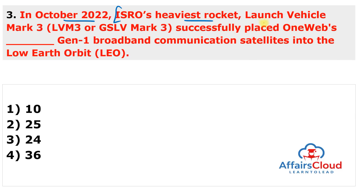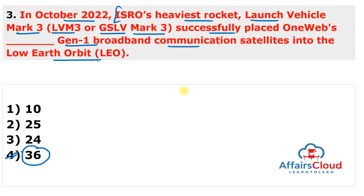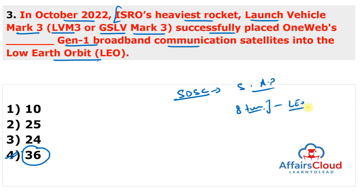Next question: ISRO's heaviest rocket, Launch Vehicle Mark 3 (LVM3) — earlier known as Geosynchronous Launch Vehicle Mark 3 (GSLV Mk3) — successfully placed how many generation one broadband communication satellites into low earth orbit? The answer is 36. The rocket was launched from the second launch pad of Sriharikota Space Centre in Sriharikota, Andhra Pradesh. LVM3 can carry up to 8 tons into low earth orbit, and all 36 generation one broadband communication satellites belong to the United Kingdom.